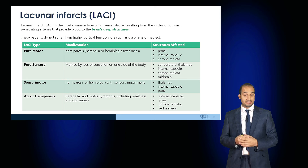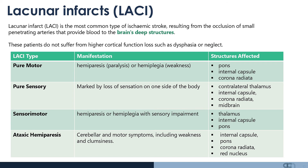Within lacunar infarcts, pure motor strokes result in hemiparesis or hemiplegia, with structures affected typically being the pons, internal capsule or corona radiata. Pure sensory lacunar infarcts manifest as marked loss of sensation on one side of the body, with the contralateral thalamus, internal capsule, corona radiata or midbrain affected. In ataxic hemiparesis, there are cerebellar and motor symptoms including weakness and clumsiness, typically due to involvement of the internal capsule, pons, corona radiata or red nucleus.